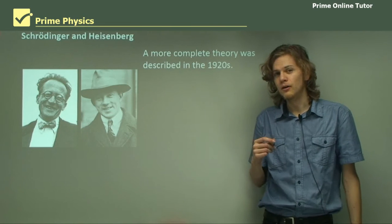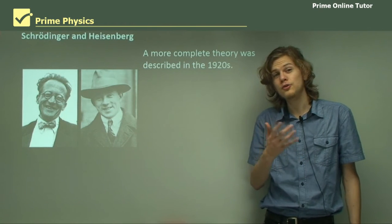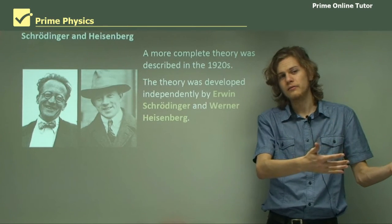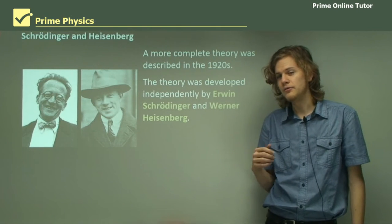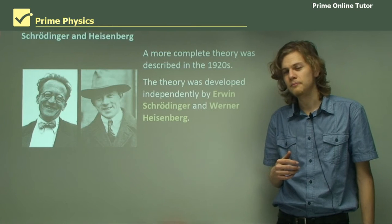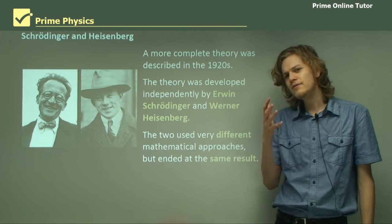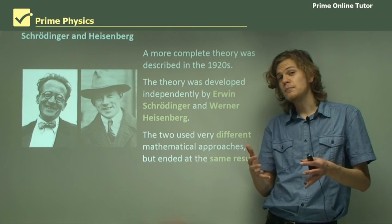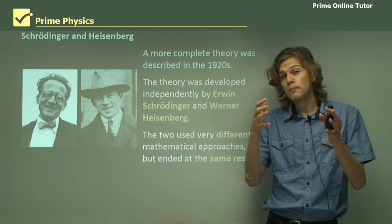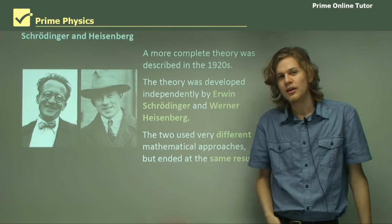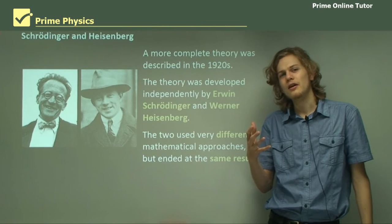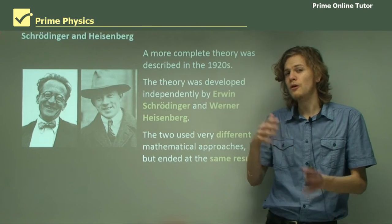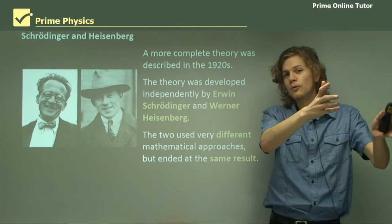A more complete theory of quantum mechanics was developed in the 1920s by two different people. The theory was developed independently — on their own without looking too much at the other person's work — by Erwin Schrödinger on the left and Werner Heisenberg on the right. The two used very different mathematical approaches in order to create their models, and so in the end both of their models looked quite different, but both models produced exactly the same results.